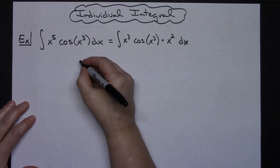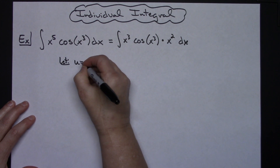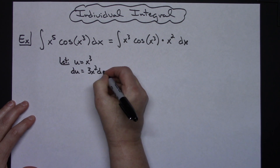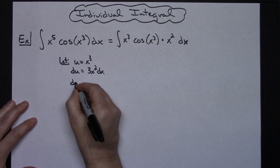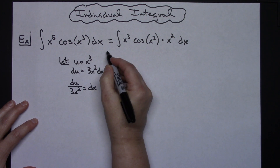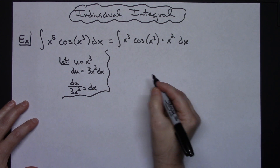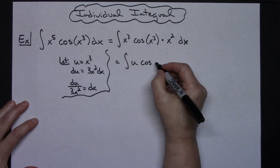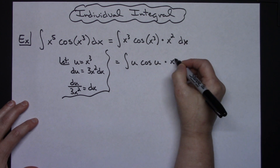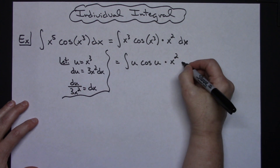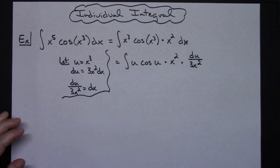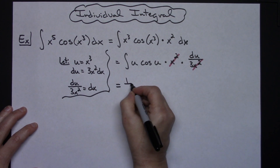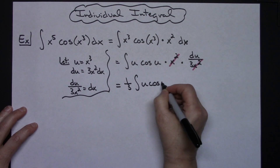Now we're going to do a basic u-substitution. We let u equal x to the third — that inside function. Taking the derivative of both sides, du equals 3x squared dx. Solving for dx, we get dx equals du over 3x squared. Substituting back in, we replace x to the third with u, keep cosine u, leave the x squared, and replace dx with du over 3x squared. The x squareds cancel out, and we can pull the one-third out front, giving us one-third times the integral of u cosine u du.